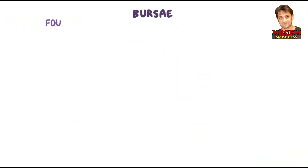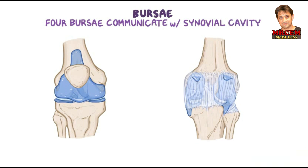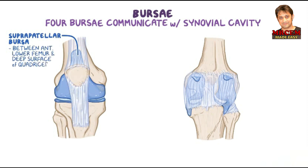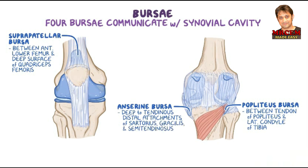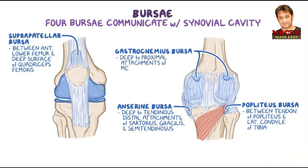There are four bursae that communicate with the synovial cavity of the knee joint. These are the suprapatellar bursa, located between the anterior surface of the lower femur and the deep surface of the quadriceps femoris; the popliteus bursa, between the tendon of popliteus and the lateral condyle of the tibia; the anserine bursa, deep to the tendinous distal attachments of the sartorius, gracilis, and semitendinosus; and the gastrocnemius bursae, deep to the proximal attachments of the medial and lateral gastrocnemius head tendons.